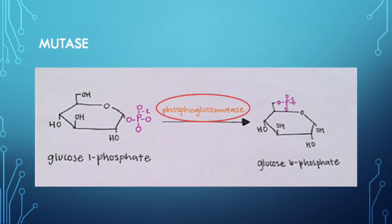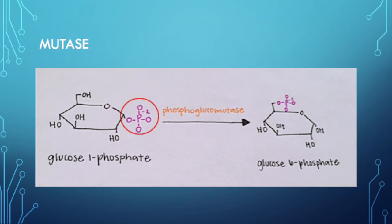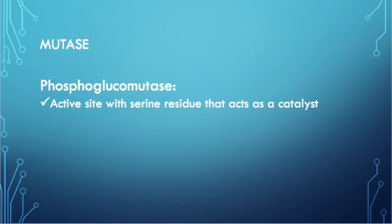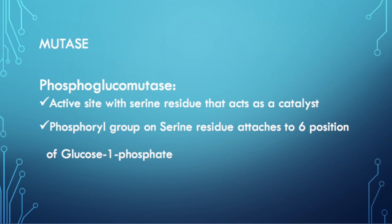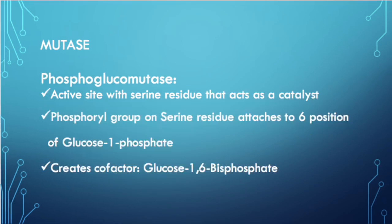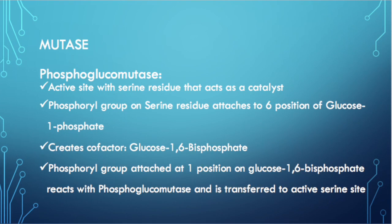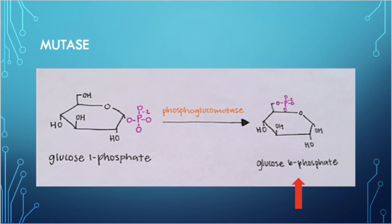The last step in glycogen breakdown is converting the glucose-1-phosphates that were cleaved into glucose-6-phosphates, done by the enzyme phosphoglucomutase — a mutase that moves a group from one position on a molecule to another, transferring the phosphoryl group from carbon-1 to carbon-6. The phosphoglucomutase active site has a modified serine residue that reacts with the sixth position on the glucose molecule, creating the intermediate glucose-1,6-bisphosphate. The phosphoryl group on carbon-1 is then transferred back to the enzyme's active serine site, yielding glucose-6-phosphate.